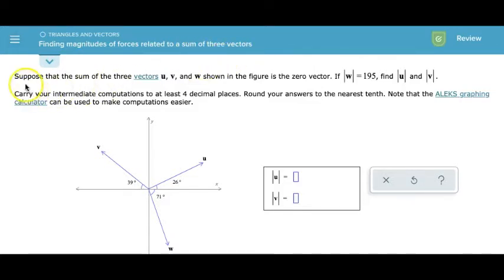In this example, suppose that the sum of the three vectors u, v, and w shown in the figure is the zero vector. If the magnitude of w is 195, find the magnitude of u and the magnitude of v. Carry your intermediate computations to at least four decimal places, and then round your answers to the nearest tenth. Note that the ALEX graphing calculator can be used to make computations easier.